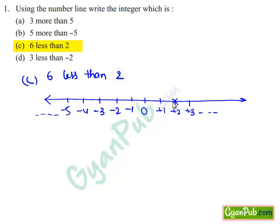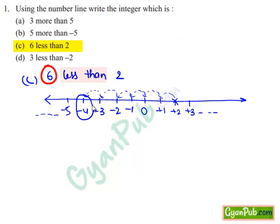And move 6 steps to the left side of plus 2: 1, 2, 3, 4, 5 and 6. We reach minus 4. So, the integer which is 6 less than 2 is minus 4.